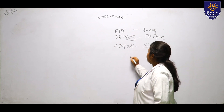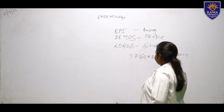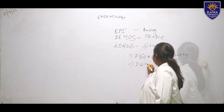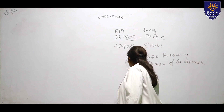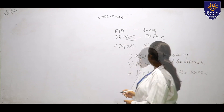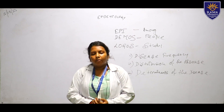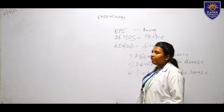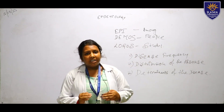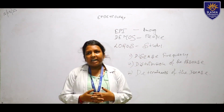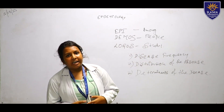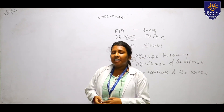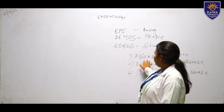There are mainly three concepts in epidemiology: first is disease frequency, second is distribution of the disease, and third is determinants of the disease. Disease frequency means how the disease is progressing — like the morbidity rate or mortality rate for a certain disease.